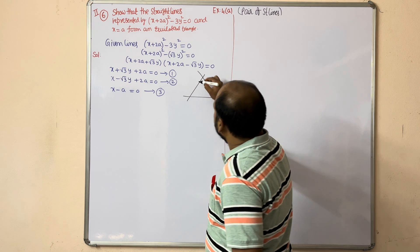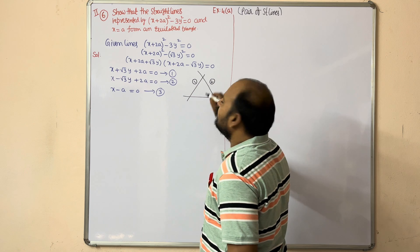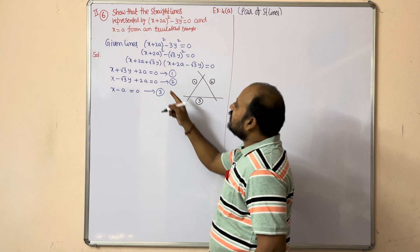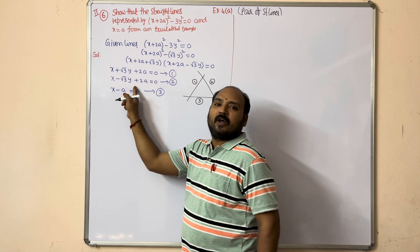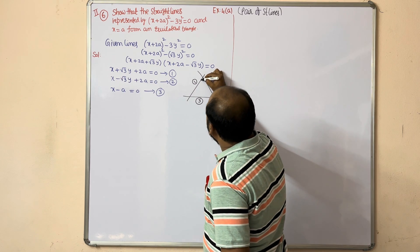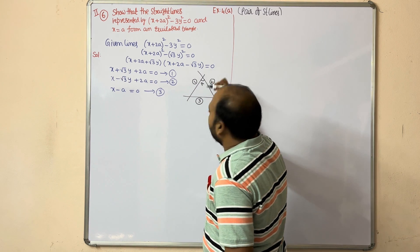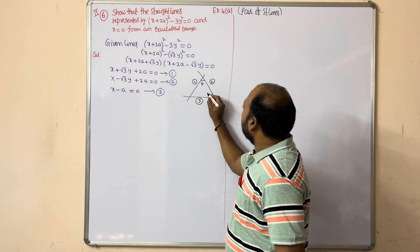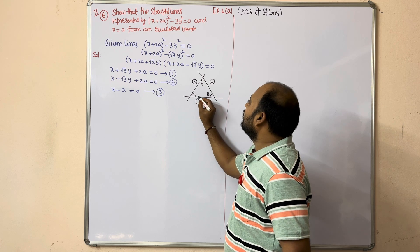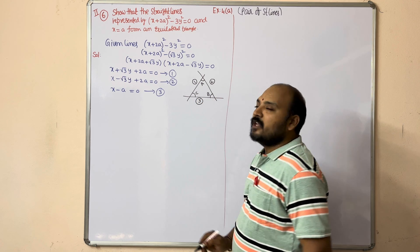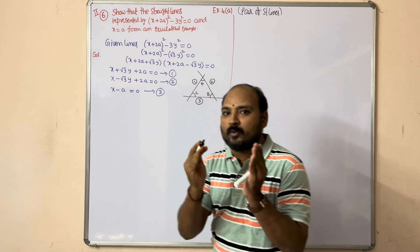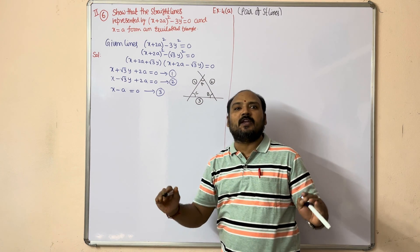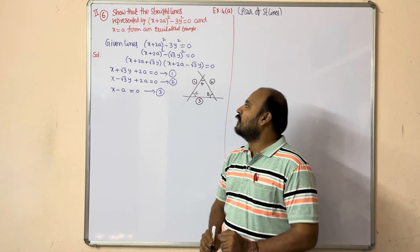So, equations 1, 2, and 3. First find the angle between lines 1 and 2 — call it angle A. Find the angle between lines 2 and 3 — call it angle B. The angle between lines 3 and 1 is angle C. If we prove that angle A = angle B = angle C, then the given lines form an equilateral triangle.